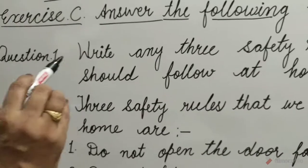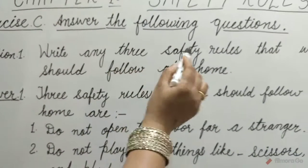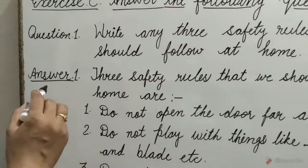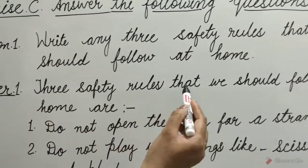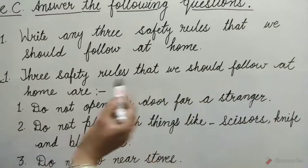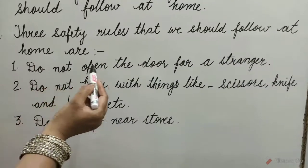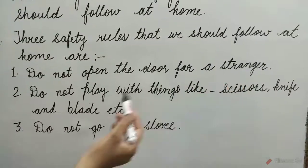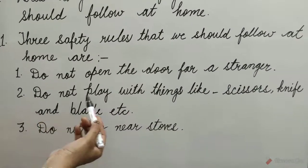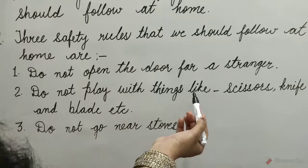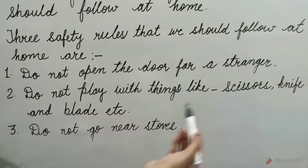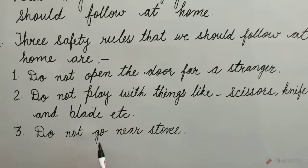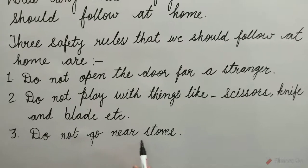Question: Write any 3 safety rules that we should follow at home. The answer is — 3 safety rules that we should follow at home are: 1. Do not open the door for a stranger. 2. Do not play with things like scissors, knife, blade, etc. 3. Do not go near stoves.